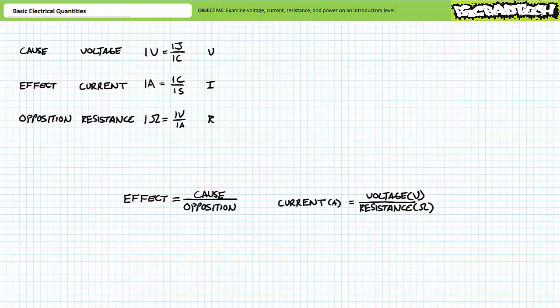Looking closely at this relationship in either form, we can make the following statements. If opposition was held constant and cause increased, effects should also increase. Stated another way, same resistance, more voltage yields more current.